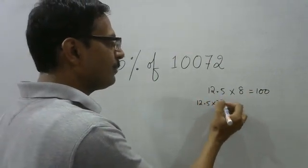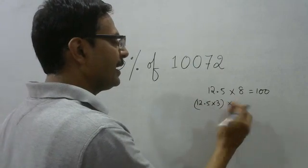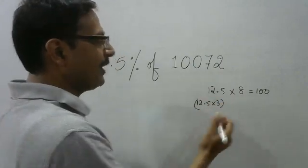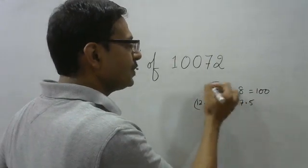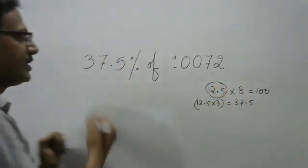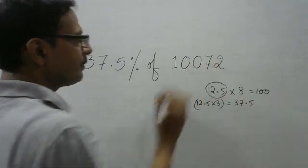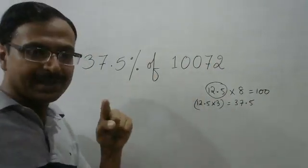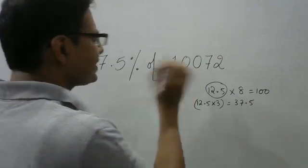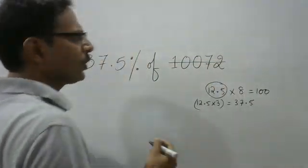So just divide this number by 8 first. You will get 12.5% of this number. So just see whether this number is getting divisible by 8 or not.